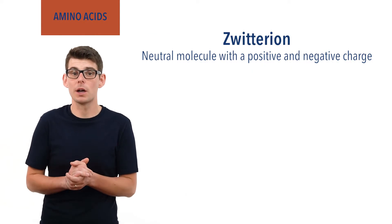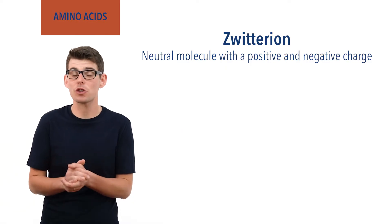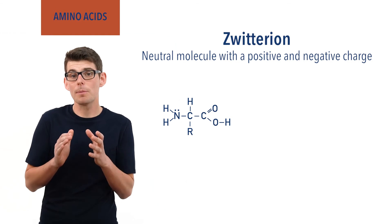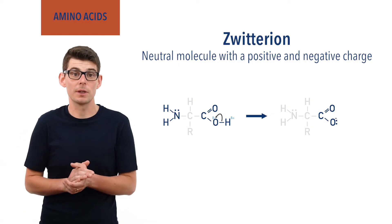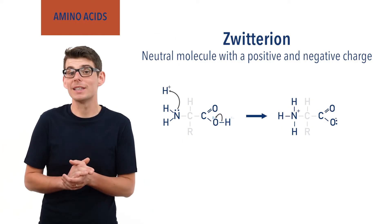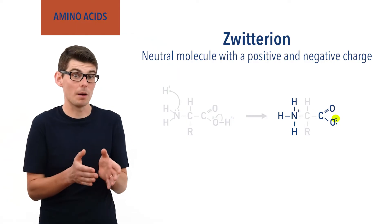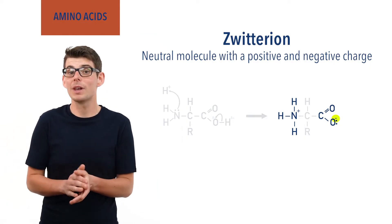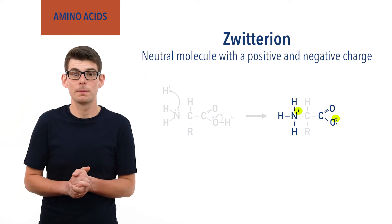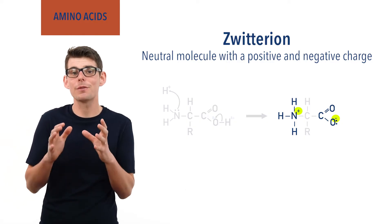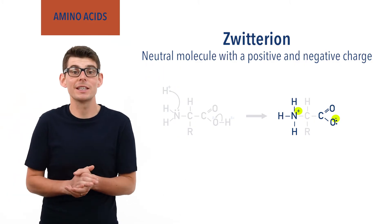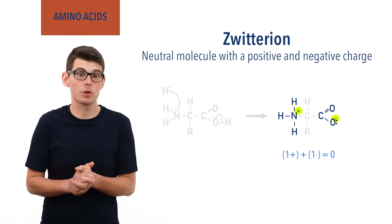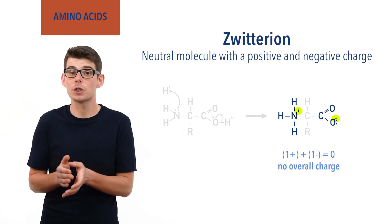To form a zwitterion there is an internal acid-base reaction in an amino acid. The carboxylic acid group loses an H+ ion and the amine group accepts an H+ ion. As a result, the carboxylic acid group ends up with a negative charge — a carboxylate ion group — and the amine group ends up with a positive charge, a positively charged NH3+ ammonium group. Both groups now have a full ionic charge; however, as they are one plus and one minus, they cancel each other out and the molecule has no overall charge — a zwitterion.